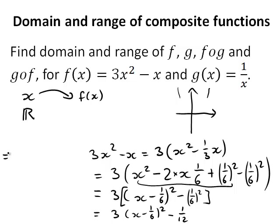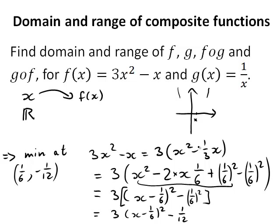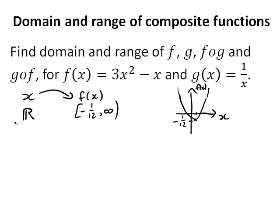Multiplying out, we get 3(x minus 1/6) squared minus 1/12, since 1/36 times 3 is 1/12. This means we've got a minimum at (1/6, -1/12). That's the lowest point. The y values — or f of x values — start from negative 1/12 and go up to infinity. So the range of f is [-1/12, ∞).